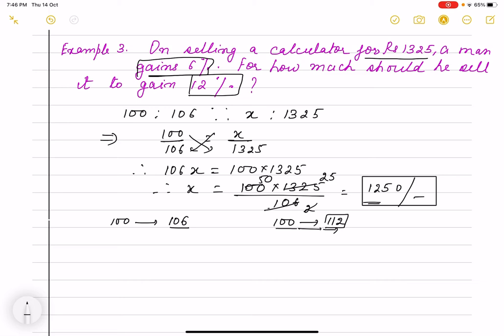So I will find out according to this one. What will be this? I want to know that if the CP is 100, then I will send it to 112. So its CP is 1250 and it wants to send it 12% profit. So now I am going to solve it.